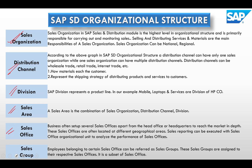The major elements of SAP SD are: Sales Organization, Distribution Channel, Division, Sales Area, Sales Office, and Sales Group. This is a common interview question. Sales Organization is the highest level in the SAP SD org structure and is primarily responsible for carrying out and monitoring sales, selling, and distribution of services and materials. Sales organization can be national or regional.